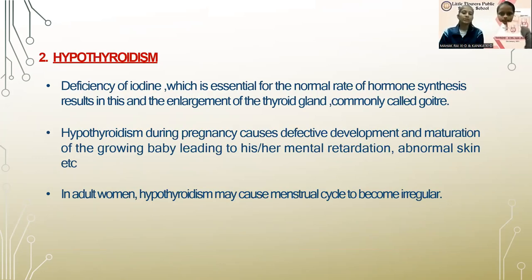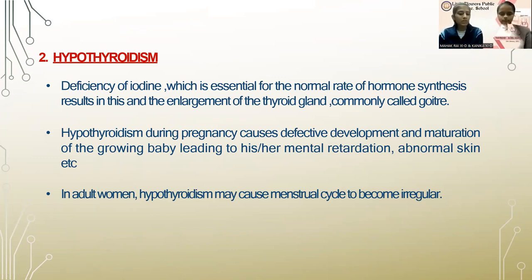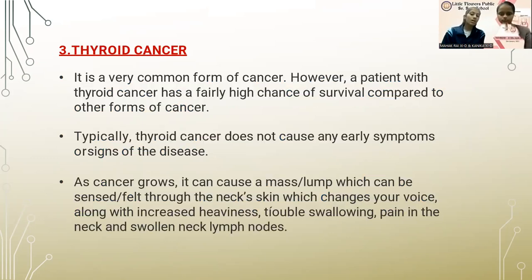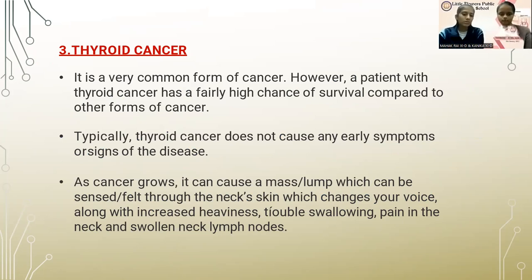Hypothyroidism: this condition is caused due to the deficiency of iodine, which is essential for maintaining the normal rate of hormone synthesis, causing enlargement of the thyroid gland, commonly called goiter. Hypothyroidism during pregnancy can affect the development and maturation of the growing baby, leading to mental retardation and abnormal skin. In adult women, hypothyroidism may cause the menstrual cycle to become irregular. Thyroid cancer: it is a very common form of cancer; however, a patient with thyroid cancer has a fairly high chance of survival compared to other cancers. It does not usually cause early symptoms, but as it grows, it can cause a lump in the neck, voice changes, trouble swallowing, pain in the neck and swollen neck lymph nodes.